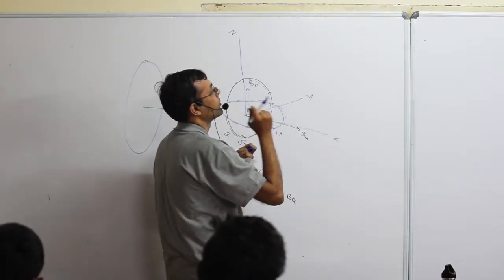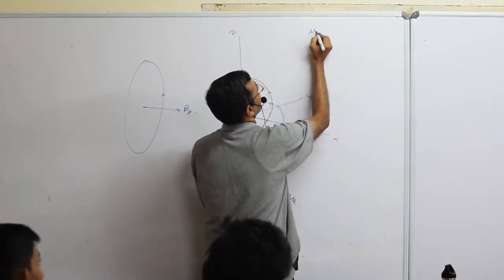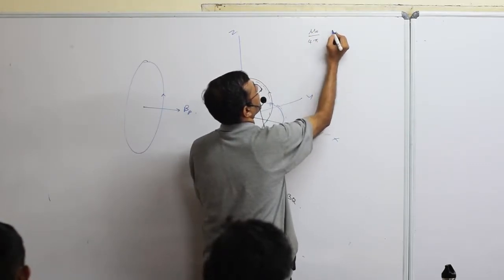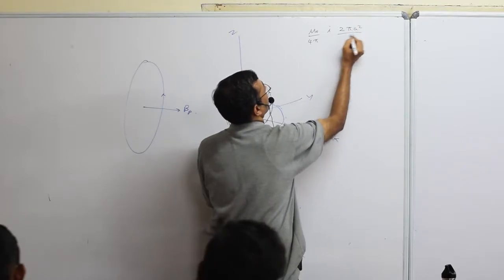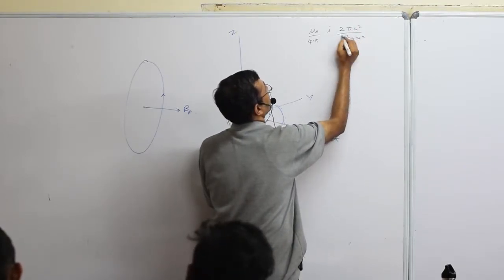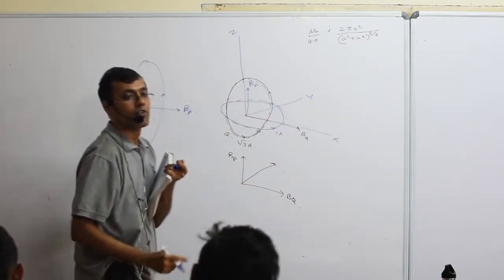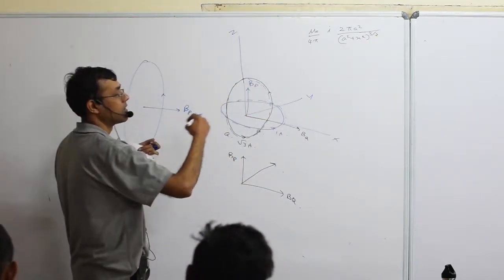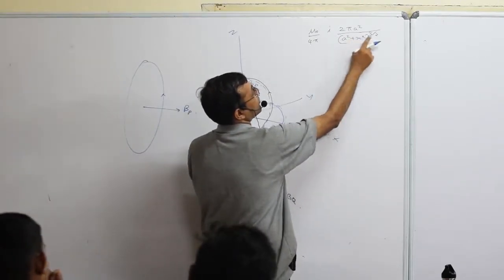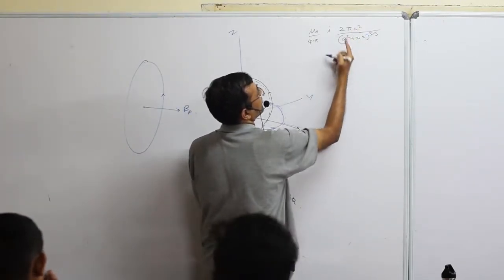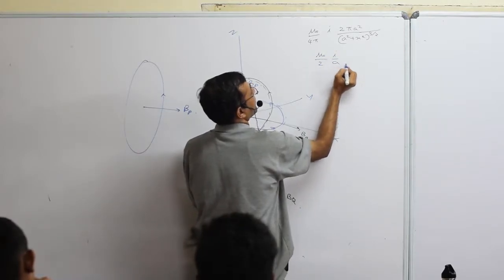If you don't remember it, derive it from the main formula: B = (μ₀/4π) · I·2πa² / (a² + x²)^(3/2). This is the general formula for a point at distance x. At the center, x = 0, so the expression simplifies — a³ and a² cancel, 2π cancels — giving B = μ₀I / 2a.